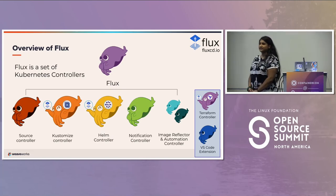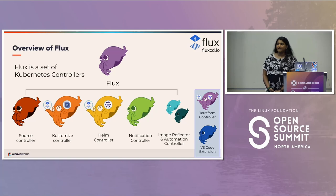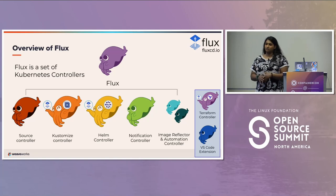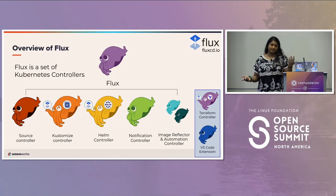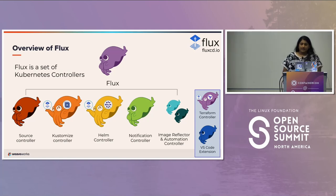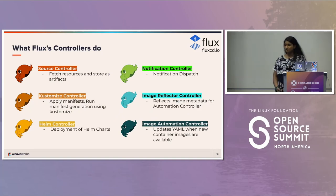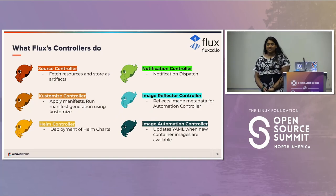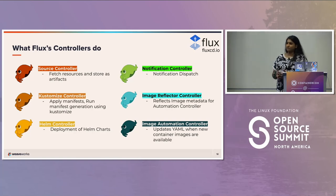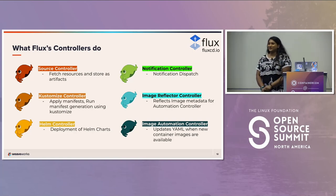Flux is actually a set of Kubernetes controllers. If you're not familiar with Kubernetes controllers, they just manage the lifecycle of objects on Kubernetes — you can create, destroy, and update them. The source controller basically fetches artifacts from the source. You can use multiple sources: Git repositories, S3 buckets, Helm registries, Helm repositories, and OCI registries.